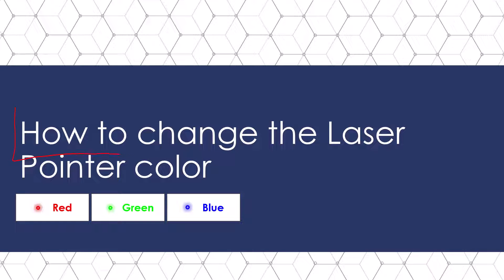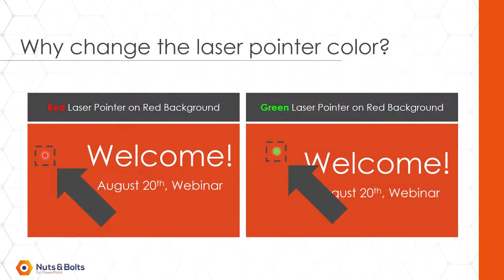Now let's talk about how to change the laser pointer color between red, green, and blue. Why would you want to change your laser pointer color? Notice that red on red doesn't look very good. Green on red looks a little bit better, and blue on red looks even better yet. You're basically changing your laser pointer color based on your presentation so that you have a high contrast situation and people can actually see what you're pointing out on screen.